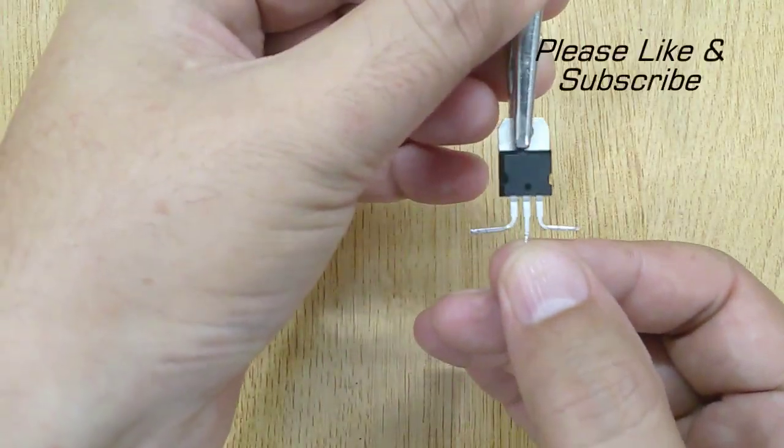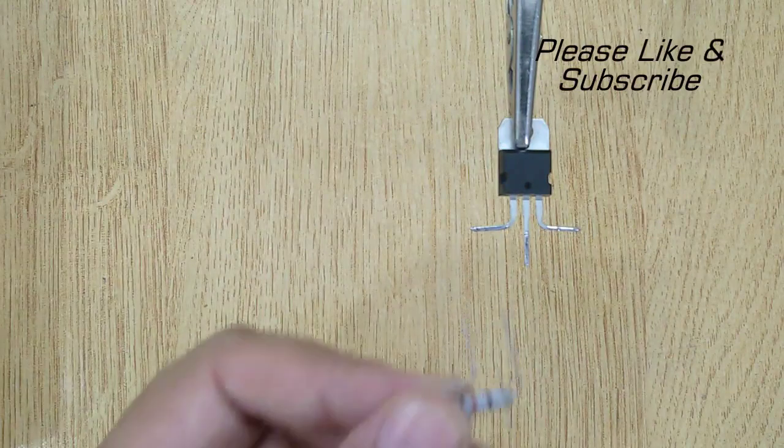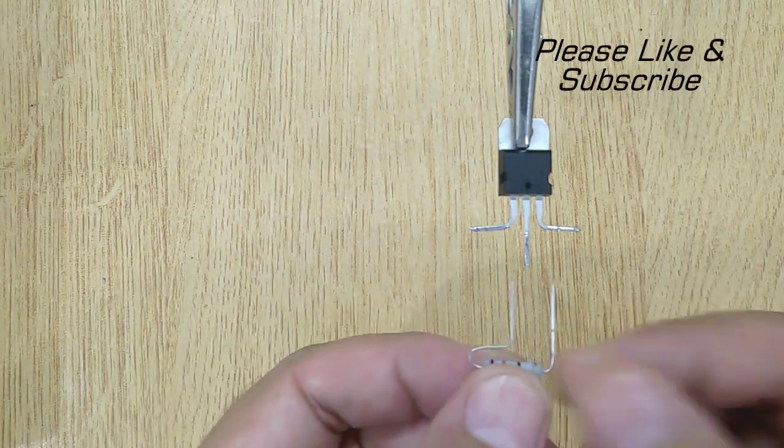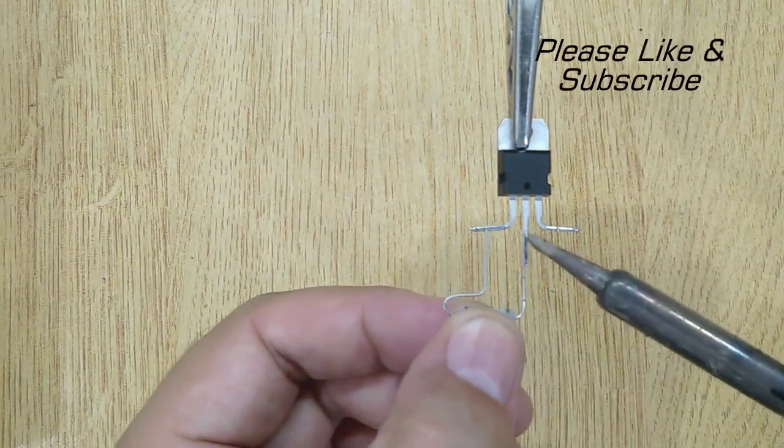Let's get started. Solder the 270 ohm resistor between pins 1 and 2 of transistor LM317.